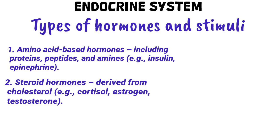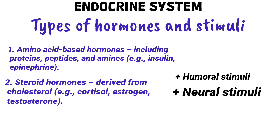Hormone secretion is usually triggered by one of three kinds of stimuli. We have humoral stimuli, which is changes in blood levels of ions or nutrients — for example, when low calcium triggers parathyroid hormone release. The second kind is neural stimuli, which is nerve impulses stimulating hormone release — for example, sympathetic nerves triggering adrenal release. The third kind is hormonal stimuli, which is when one hormone stimulates another gland — for example, when hypothalamic hormones trigger pituitary hormones. Hormones act in small concentrations and may circulate freely or bound to plasma proteins, depending on their solubility.